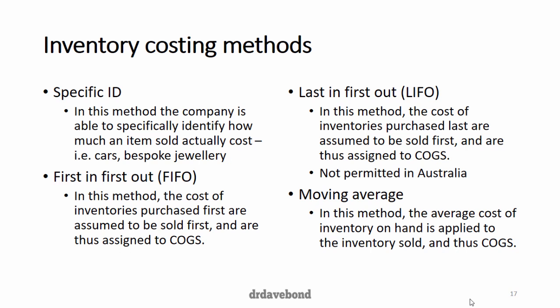The last method, which fits well with non-perishable goods, is the moving average. As new inventory gets added, it's as if everything gets pooled and we apply an average price per unit. We'll look at some numbers to make this clearer.